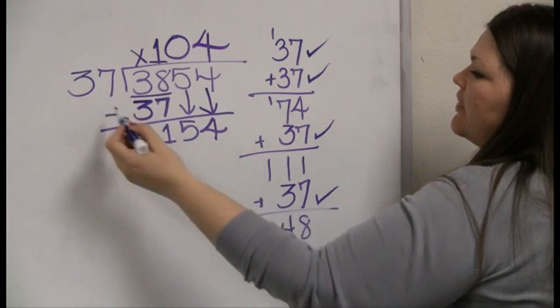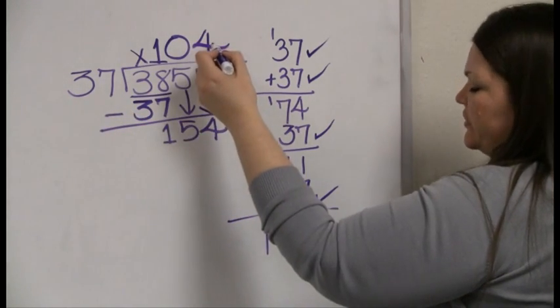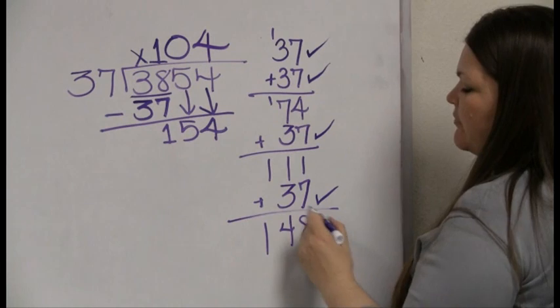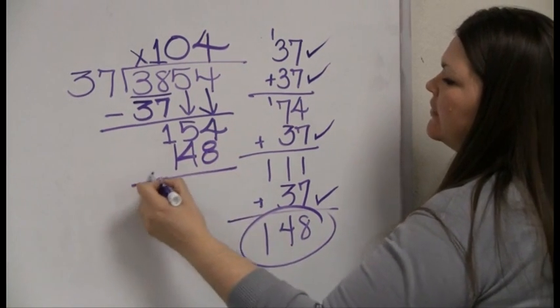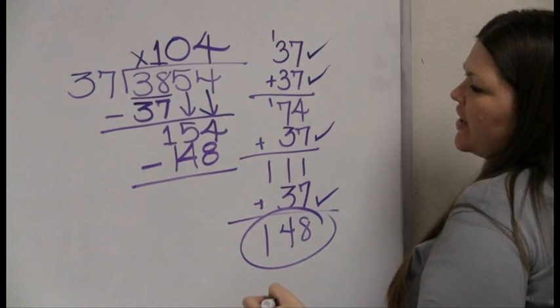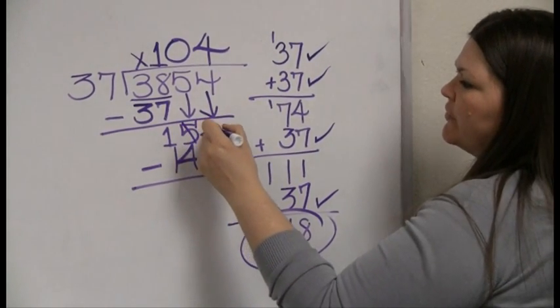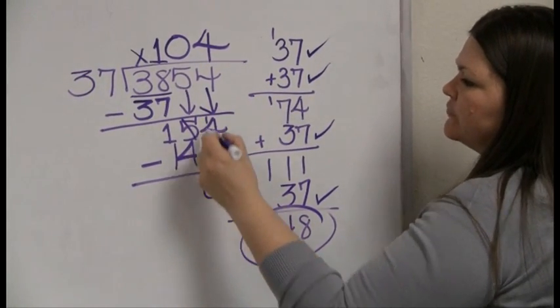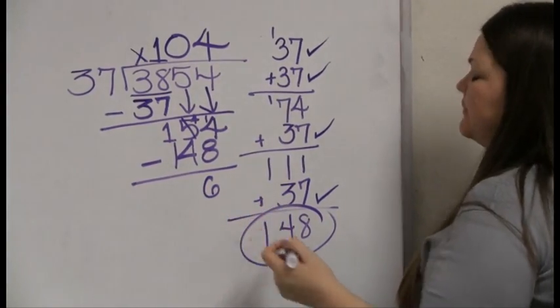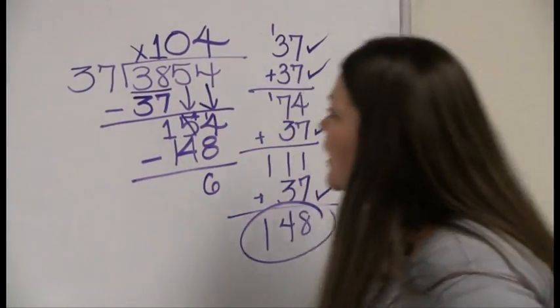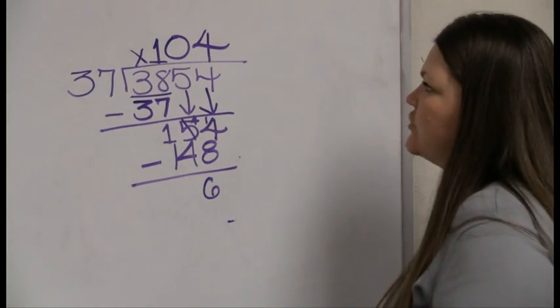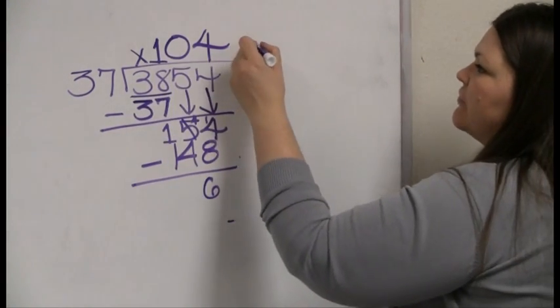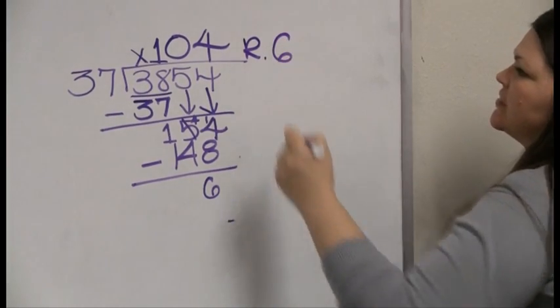So 37 goes into 154 four times. And I have to write the multiplication fact underneath. 148 to see how much left over I have. Let me borrow. 14 take away 8 is 6. Okay? So, again, I have no more digits to drop down. So this little number that's here is just a remainder. So my answer is 104, remainder 6.